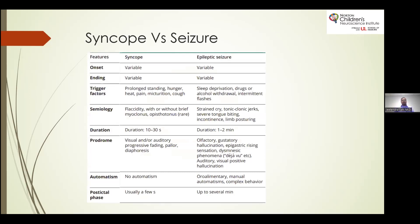This table illustrates the differences between typical syncope and epileptic seizures. Onset and ending are variable for both, but syncope has very specific trigger factors—sometimes longstanding hunger, heat, pain, mutilation, cough, or other situational triggers. For epileptic seizures, typical triggers are sleep deprivation, drug or alcohol withdrawal, and light-sensitive photic stimulation.